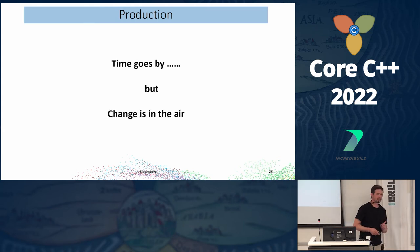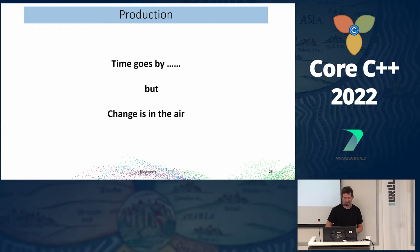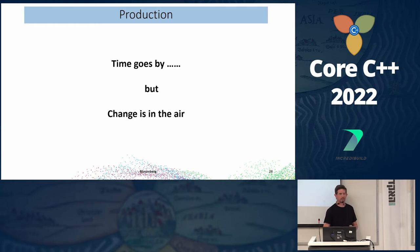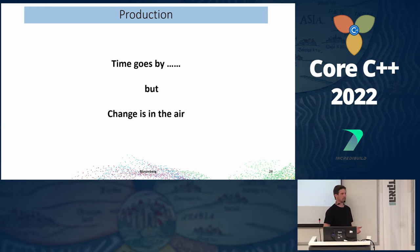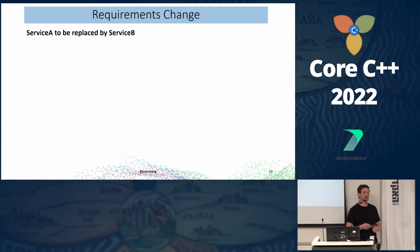But change is in the air, because new business and new requirements are going to come along and try to bend your system out of shape. Theoretically APIs stay stable. I'm going to show you a case where all the APIs stayed stable, but because of changing requirements I had to do a large change in the code. What was the requirements change? Essentially, service A is going to be replaced by service B.